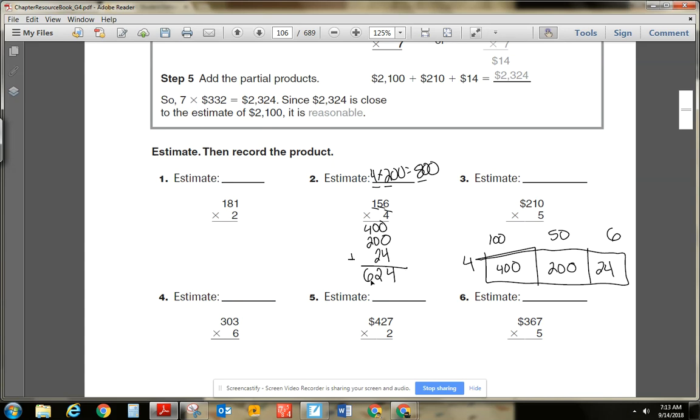A couple of mistakes that kids make is they don't line up their place value. Or they struggle with just their basic facts of what is 4 times 5. The other area that most kids struggle with is in this 10s place. Doing 4 times 5 tens is 20 tens. Lots of times they'll only write 20. They'll forget to move that 0 in that 1s place.